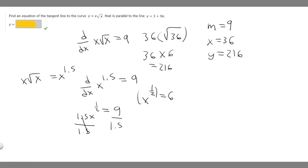Now that we know our slope, our x, and our y, we can use the point-slope formula in order to find what our tangent line is.